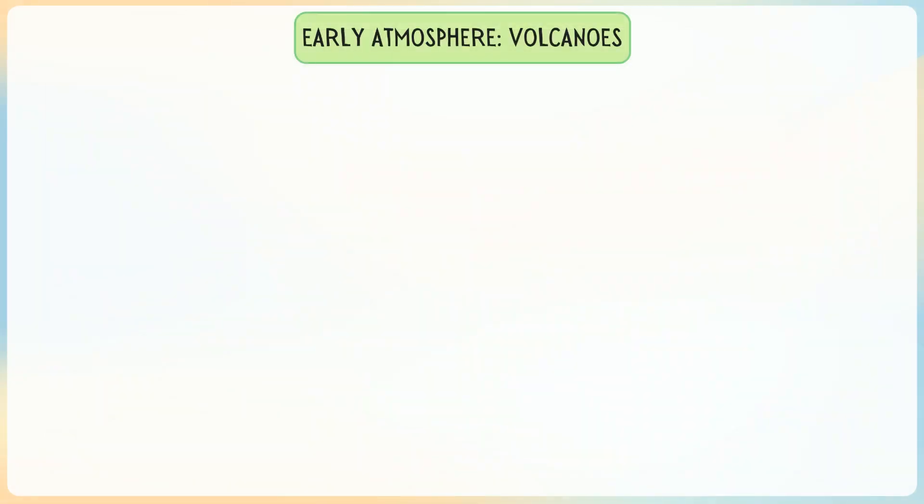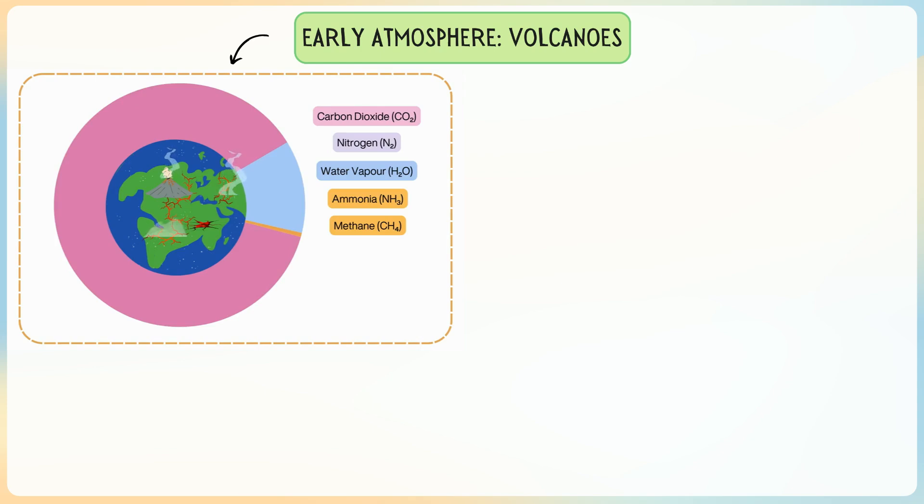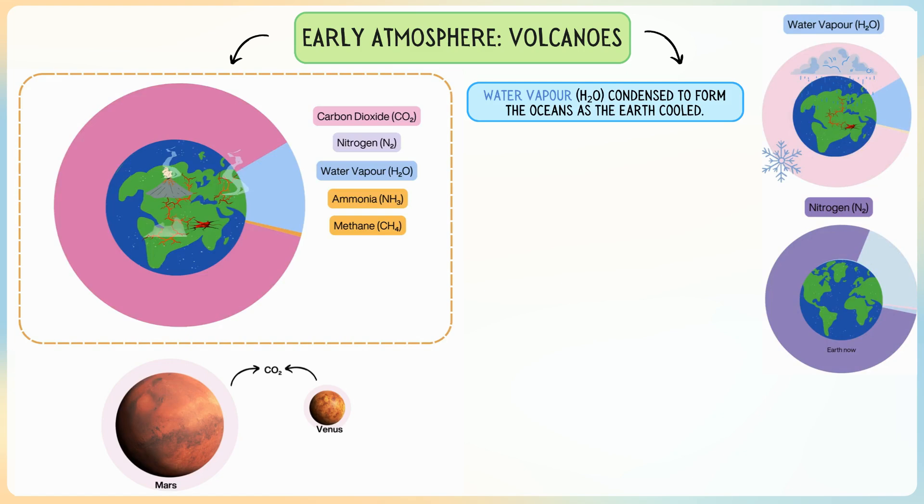In today's lesson, we examined how volcanic activity influenced the Earth's early atmosphere and the formation of oceans. We learned that during the first billion years of Earth's existence, intense volcanic activity released various gases. This volcanic outgassing contributed to the composition of the early atmosphere, which was rich in carbon dioxide, similar to the current atmospheres of Mars and Venus. We also focused on the role of water vapour released by volcanic eruptions, which condensed into liquid water, forming the primordial oceans as the Earth cooled down.